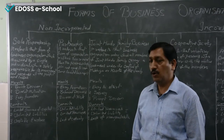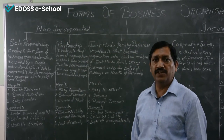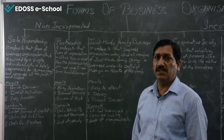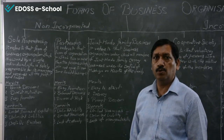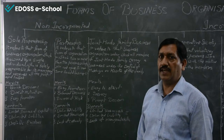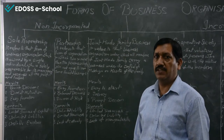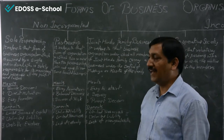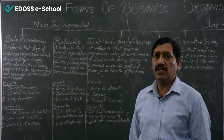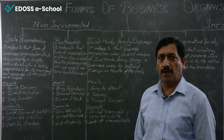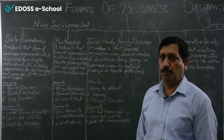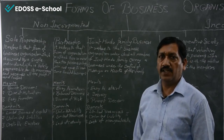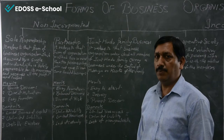Merits of sole proprietorship: First is quick decision-making — that is the most important benefit, as the owner can take all decisions himself without consulting any other person. Second is direct motivation — as much work he does, that much he will earn. If he closes his shop, he will not get any benefits, so he will be directly motivated.